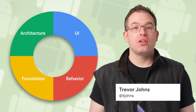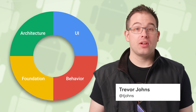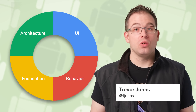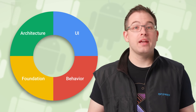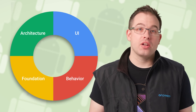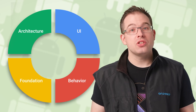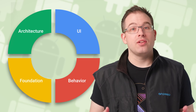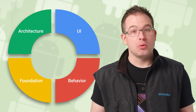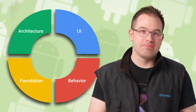Jetpack consists of architectural guidance supported by a set of libraries and tools in four key areas of Android development: architecture, UI, behavior, and foundation. Each Jetpack component is individually adoptable, but they are built to work well together.